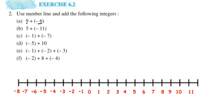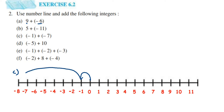The third question is minus 1 plus minus 7. Both are negative integers. We are going to start from 0. From 0, minus 1 means one step to the left side, reaching minus 1. Then we have minus 7, so we move 7 steps towards the left side. Counting 7 steps, we are reaching minus 8. So minus 1 plus minus 7 is equal to minus 8.